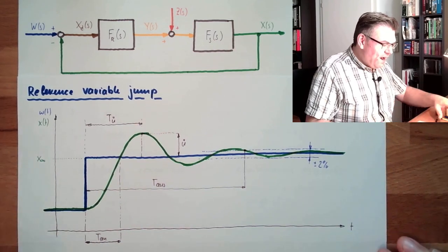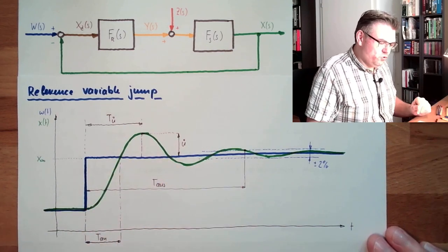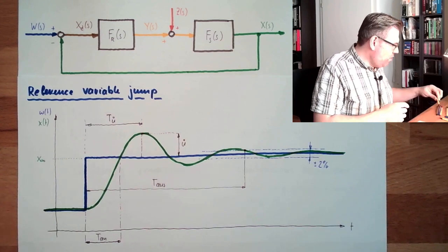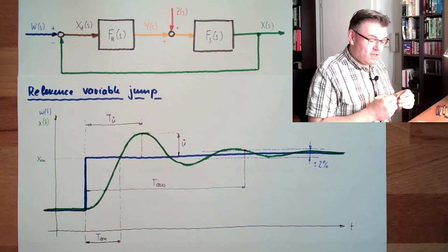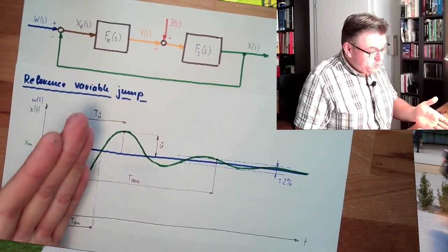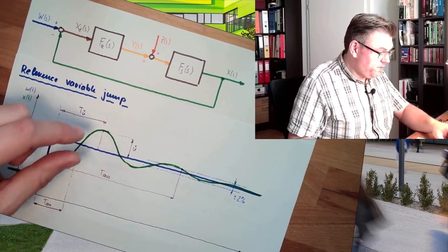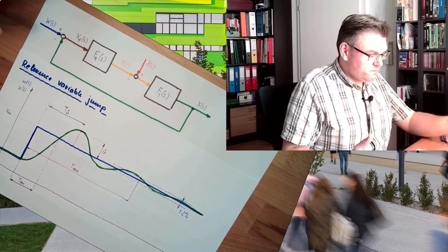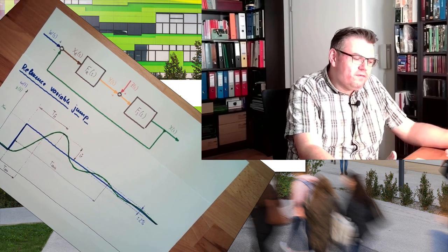These are the values we might use as some measure to define how this looks like for us. So these are overswing time, overswing value, overswing width, rise time, and setting time. These things I can read out of this reaction.